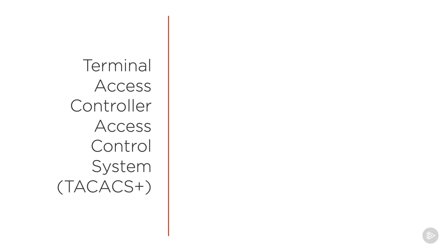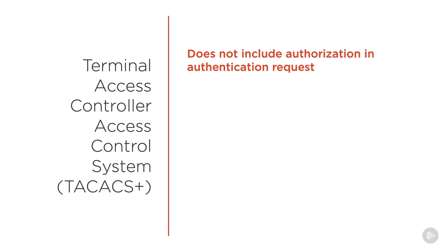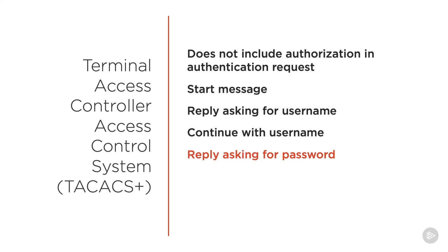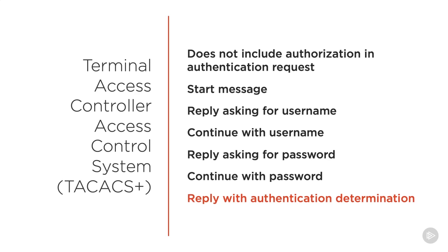TACACS+ stands for Terminal Access Controller Access Control System. The key difference is that TACACS+ does not include the authorization request with the authentication request. The conversation starts with a start message from the AAA client to the server, which replies requesting a username. The client responds with a continue message containing the username, then the server asks for the password. The client responds again with the password. The final reply includes one of four options: accept (authentication valid), reject (authentication failed), error (an error occurred), or continue (asking for more information, such as a two-factor PIN).